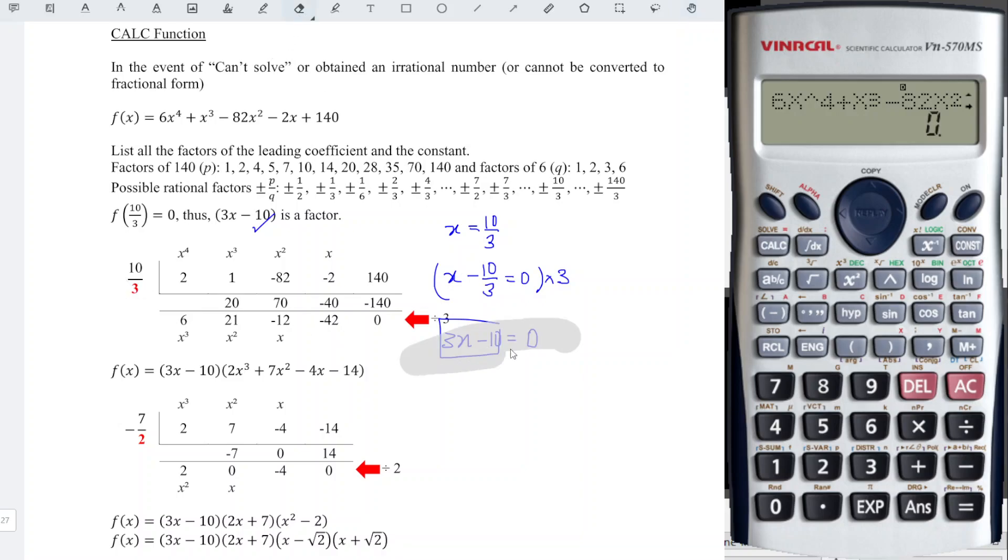So for this case, we need to divide all the numbers by 3. So 6 divided by 3, we obtain 2. 21 divided by 3, we obtain 7. Negative 12 divided by 3, we obtain negative 4, and so on in order to obtain the correct degree 3 function.